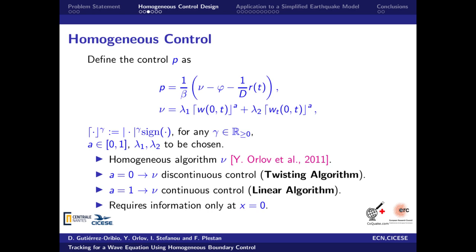To get this ISS result, let us present the design control. It consists of feedback linearization terms and a homogeneous algorithm inspired by Orlov et al. 2011. The brackets notation represents a sign power function depending on the value of a. Then, when a is equal to 0, we obtain a discontinuous control, which is called twisting algorithm in sliding mode theory.